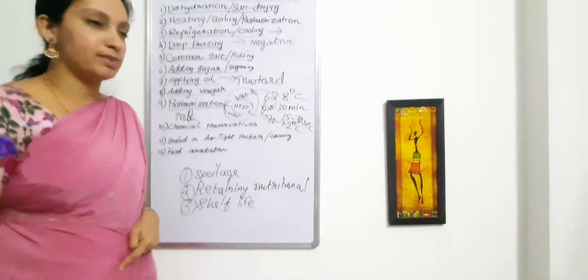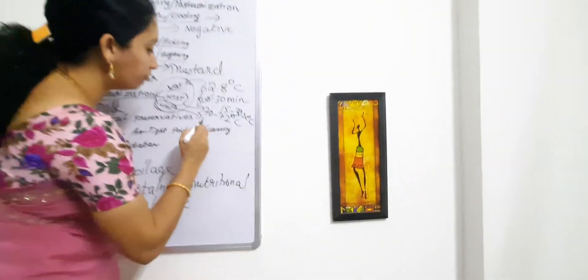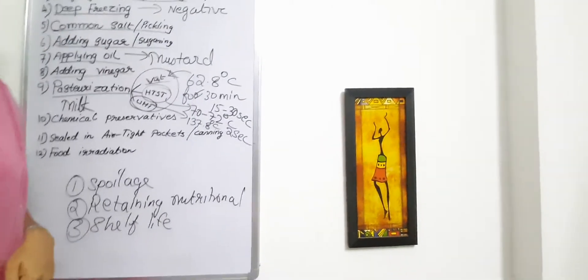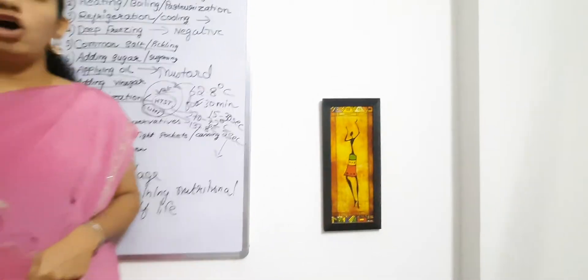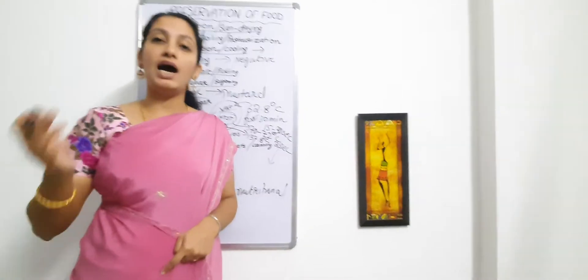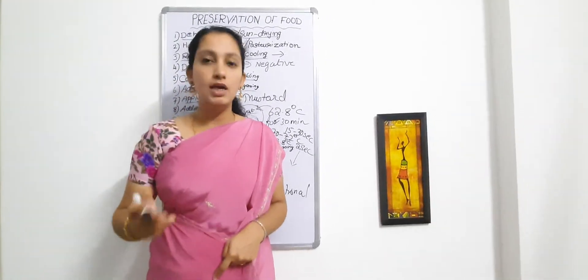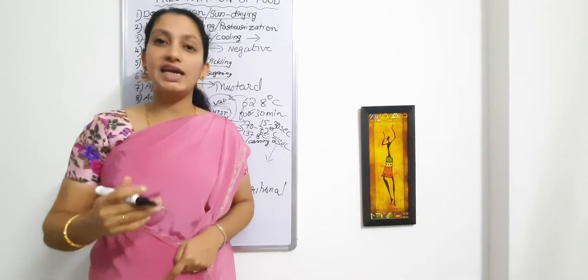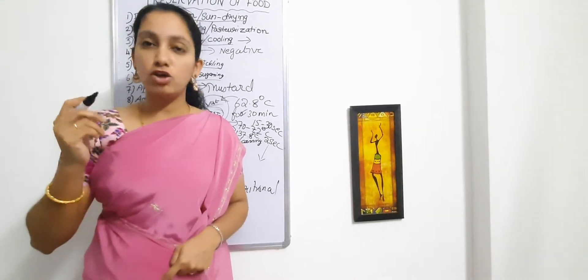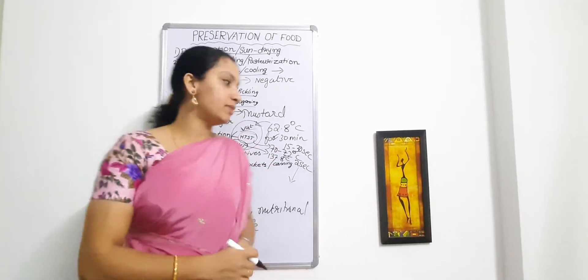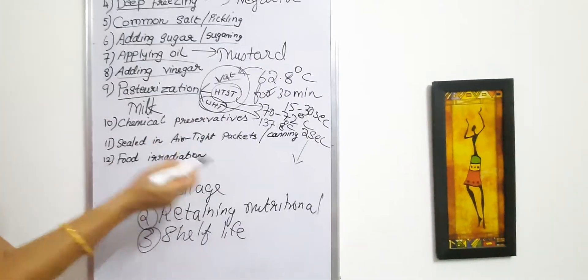The UHT method stands for Ultra High Temperature method. This method uses 137.8 degrees Celsius for 2 seconds. It can kill bacteria or any microorganisms that survived after the VAT or HTST methods, including thermophilic bacteria such as Bacillus or Coxiella burnetii, which is one of the causative agents of Q fever. To kill those heat-resistant bacteria, we use the UHT ultra high temperature method.